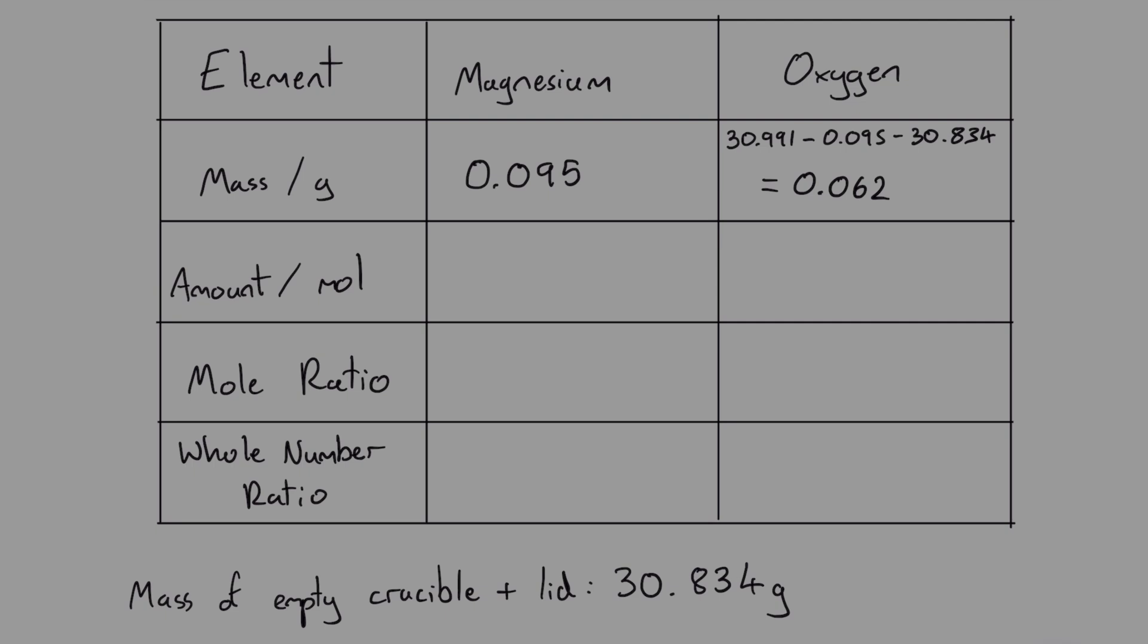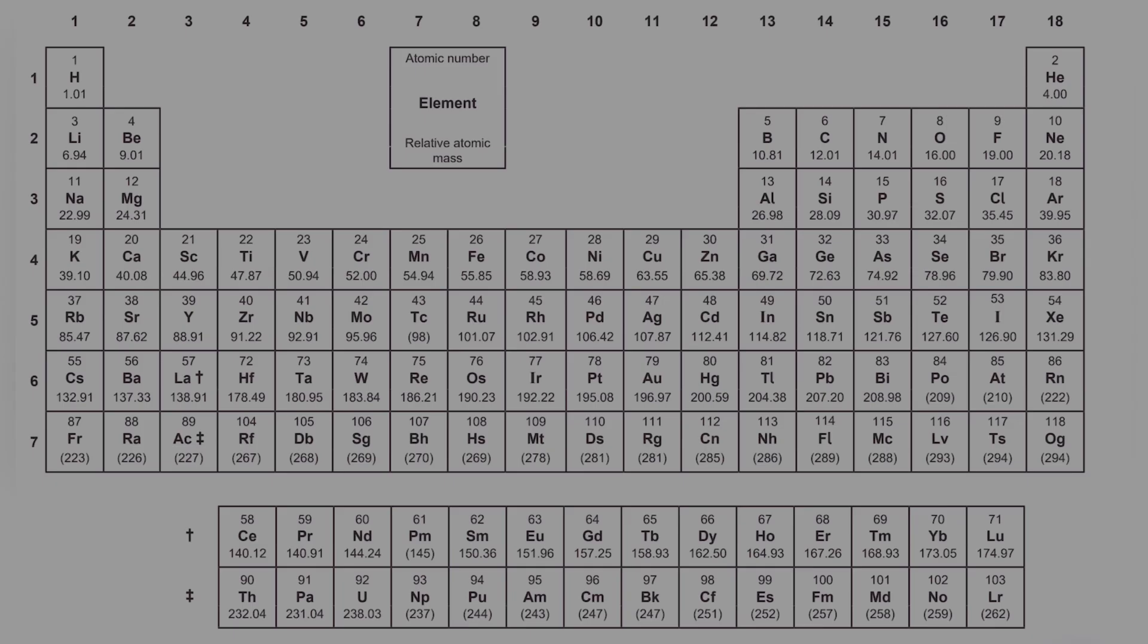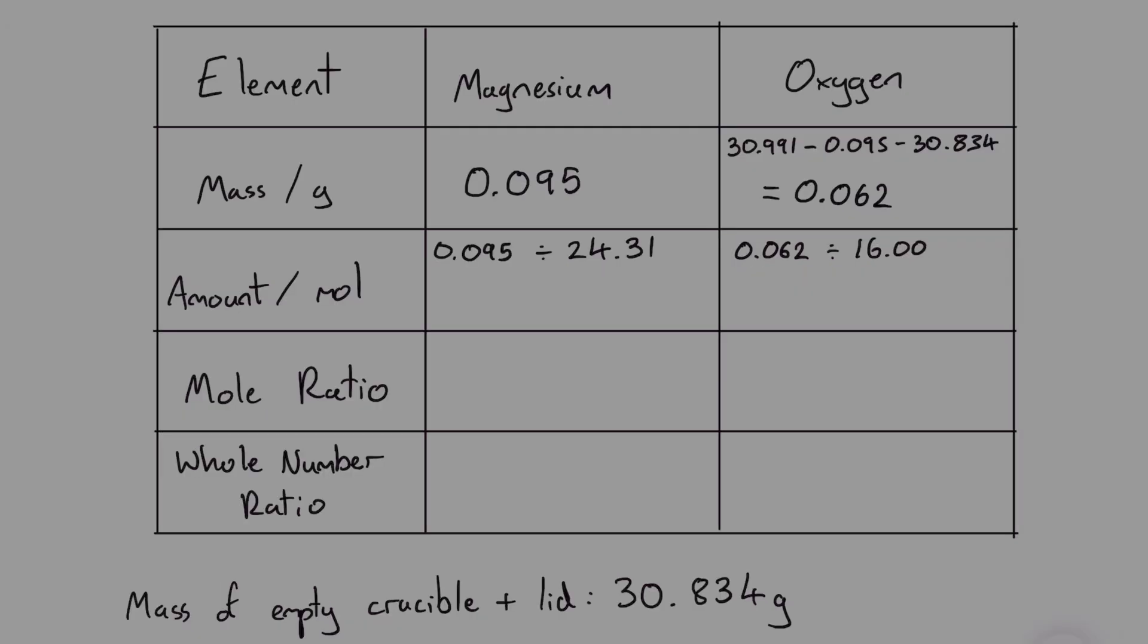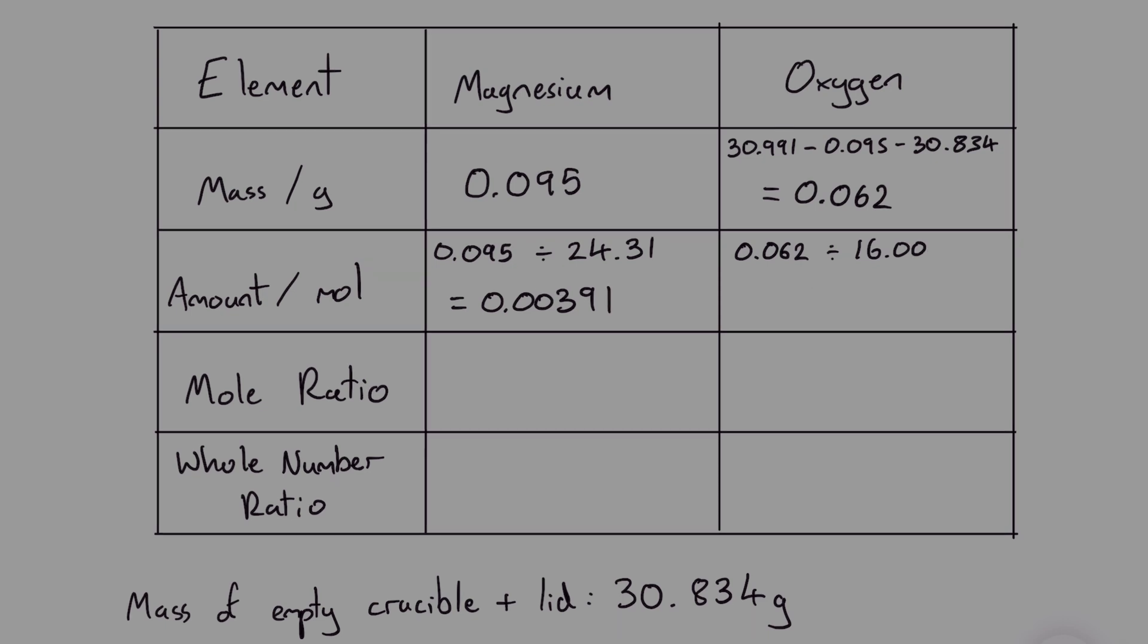Next we'll calculate the number of moles of magnesium and oxygen. Using the periodic table we know the relative atomic mass of magnesium is 24.31 and oxygen is 16. So the number of moles of magnesium is the mass of magnesium divided by its relative atomic mass. 0.095 grams divided by 24.31 which equals 0.00391 moles. For oxygen we do the same thing 0.062 grams divided by 16 which gives us 0.00388 moles.